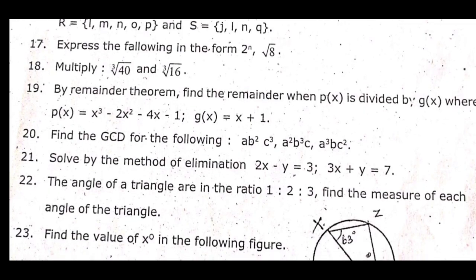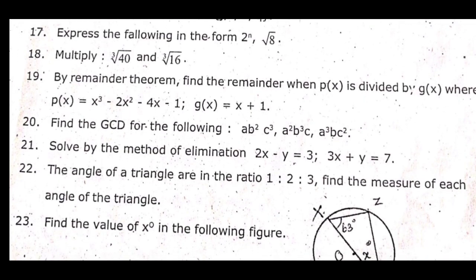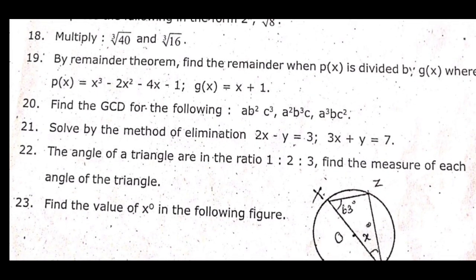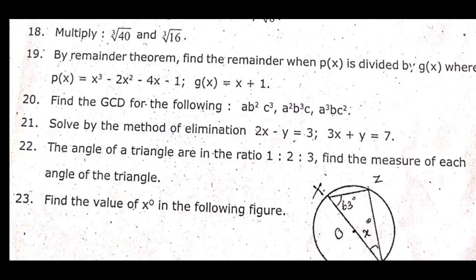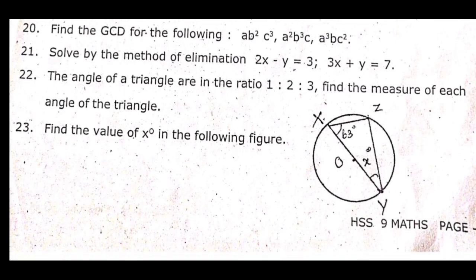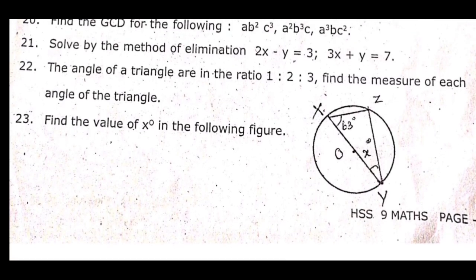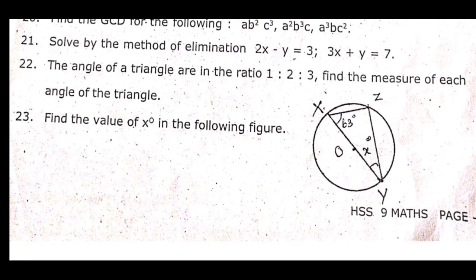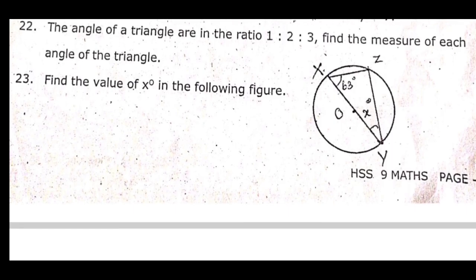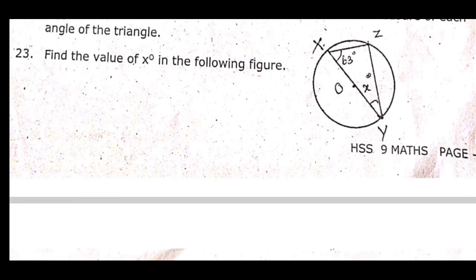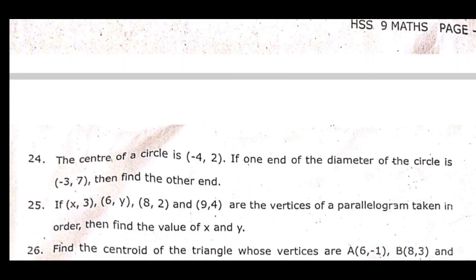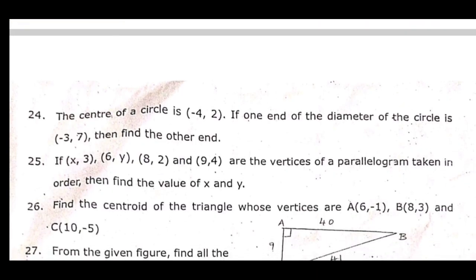17th: Express the following in the form — 2 to the power of n, root 8. 18th: Multiply 3 root of 40 and 3 root of 16. 19th: By remainder theorem, find the remainder when P(x) is divided by G(x), where P(x) equal to x cubed minus 2x squared minus 4x minus 1, G(x) equal to x plus 1. 20th: Find the GCD for the following — a²b³c, a³b²c, a³bc². 21st: Solve by the method of elimination: 2x minus y equal to 3, 3x plus y equal to 7.